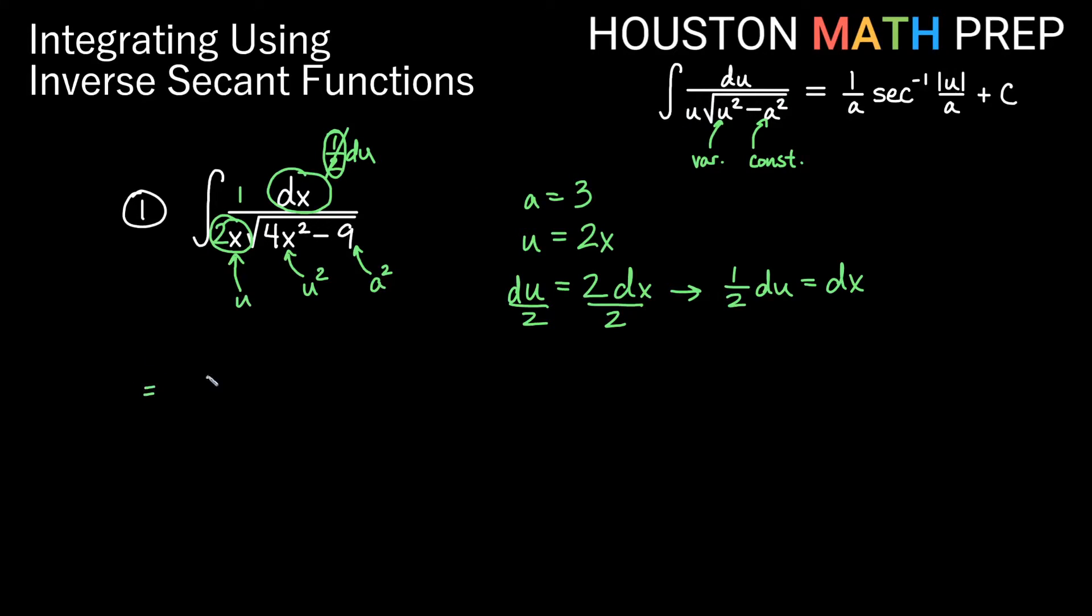So now our integral is going to be just du on the top. We do have the u we need on the outside, and our root here becomes u squared minus a squared inside. This is exactly the definition, so now we just replace it with our formula. Our answer should look like 1 over a inverse secant of u over a plus our constant of integration.